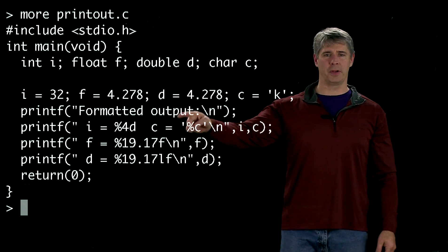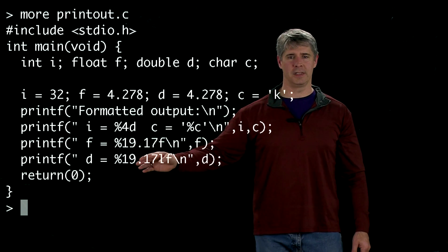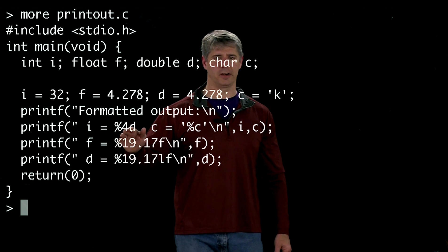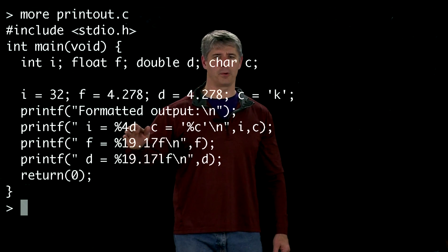And now we're going to print values of i, c, f, and d. And this percent is another special character here. So where you see %4d, that means it's going to print out an integer with four spaces.